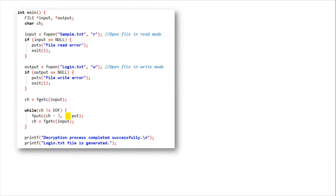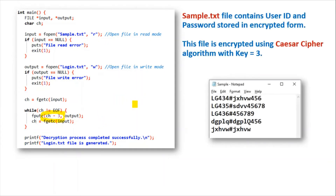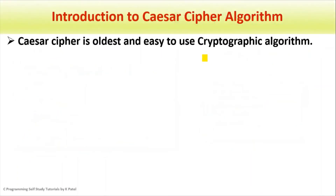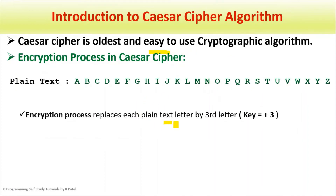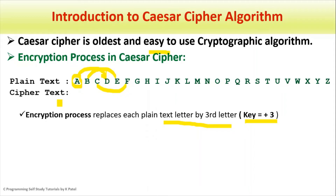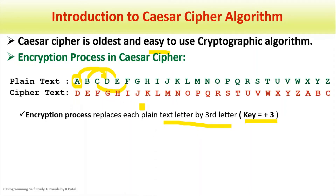Now let's talk about the reason behind ch minus 3 in our program. This file is encrypted using the Caesar Cipher algorithm with a key equal to 3. Caesar Cipher is the oldest and easiest-to-use cryptographic algorithm. The encryption process in Caesar Cipher replaces each letter by the third letter ahead — that means key equals plus 3. So if the plaintext character is A, add 3, and we get D as our ciphertext character. Likewise, B becomes E and C becomes F. So effectively, plaintext A through Z characters become D through Z and then wrap around to A, B, C, because we have only 26 letters in the alphabet.